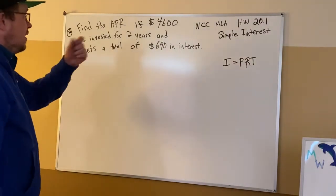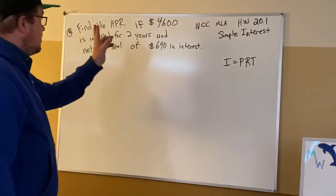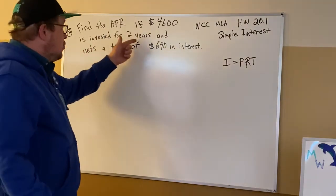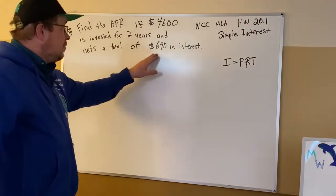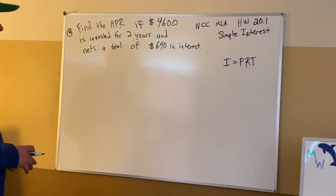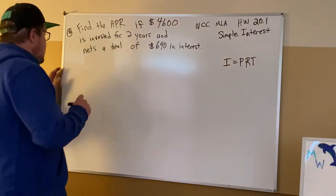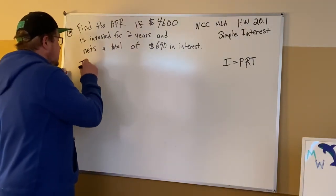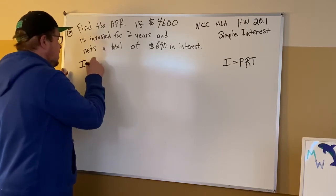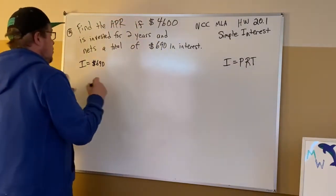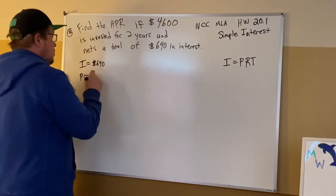All right, so what we're going to do here is we're going to find the APR. If we know that $4,600 is invested for two years, and the total of $690 in interest is what it nets. So I think this might be a good time to get working on this. Interest, do we know that? Yes we do, is $690, because we have interest equals PRT. Do we know the principal? Yes we do, P is equal to $4,600.